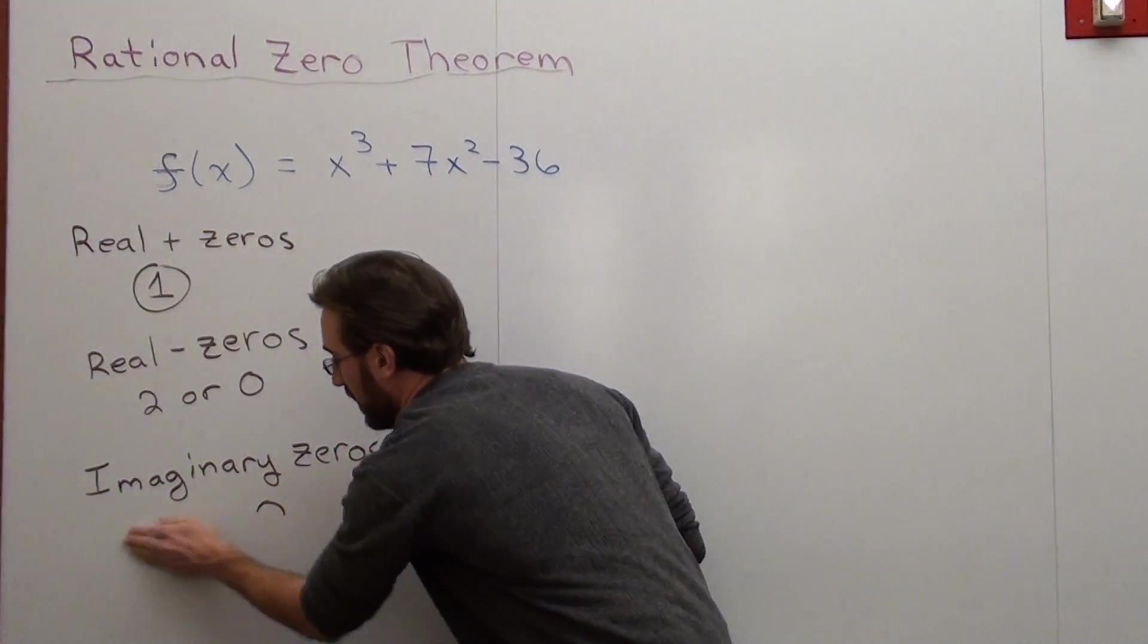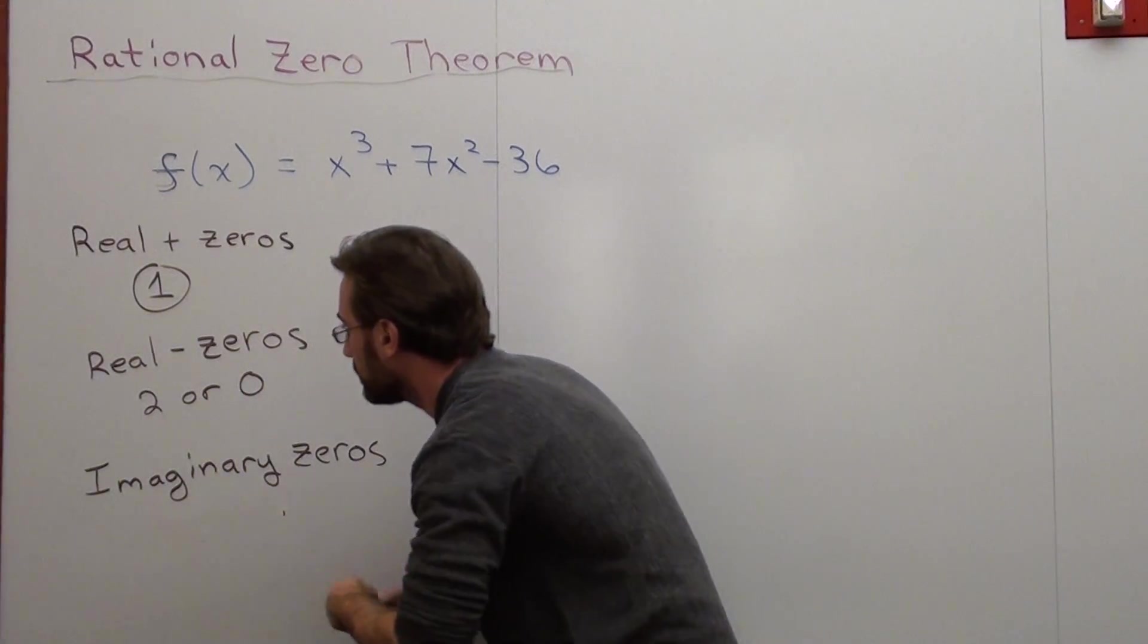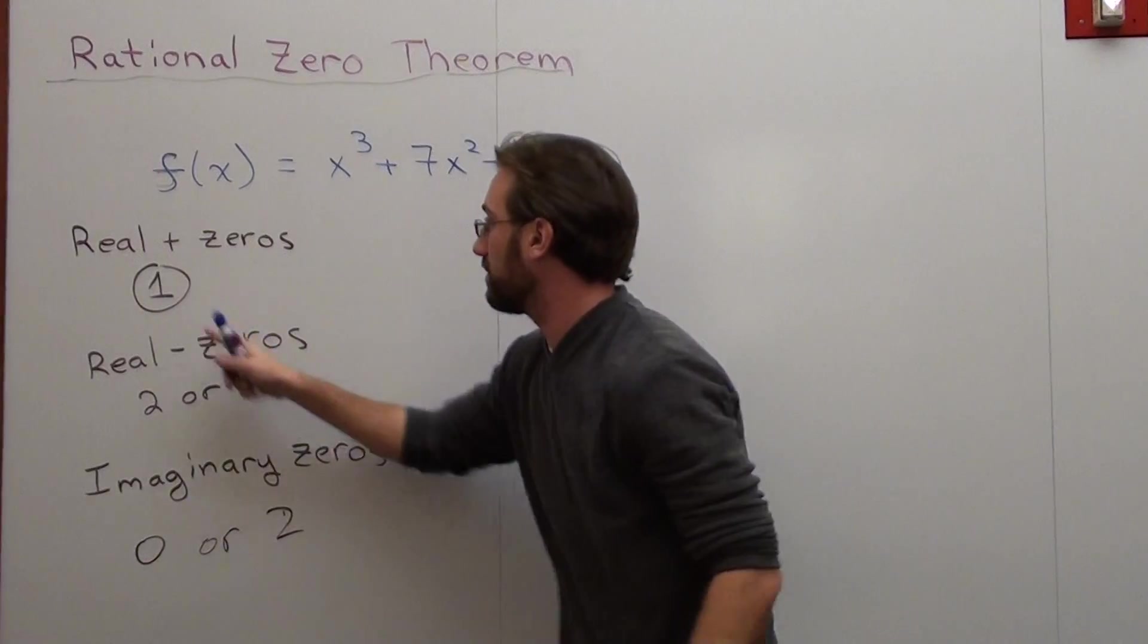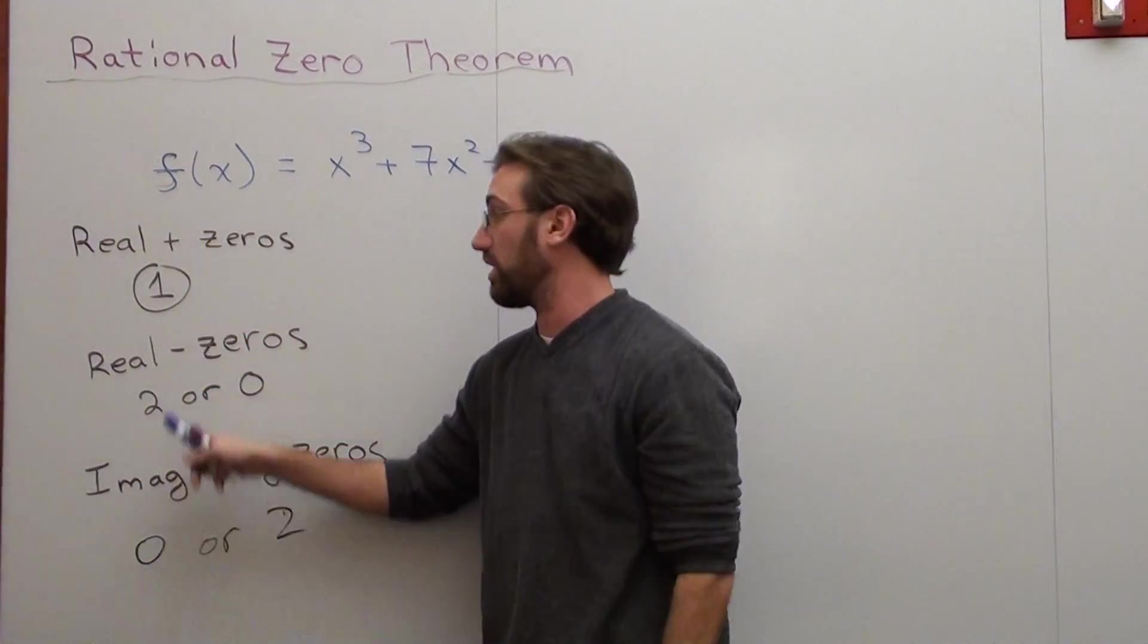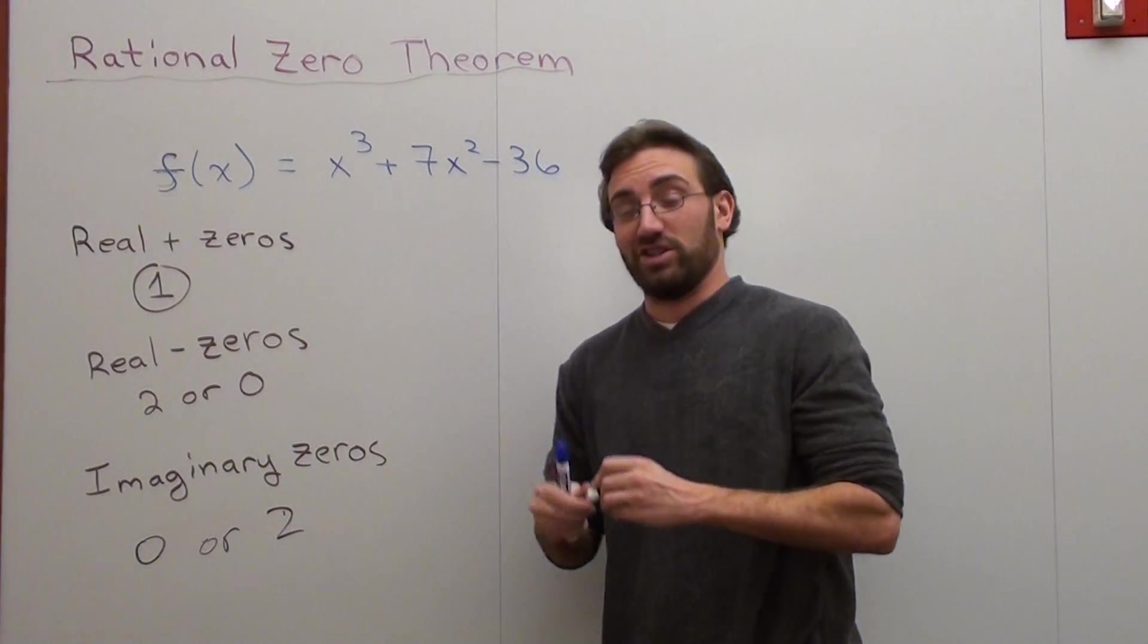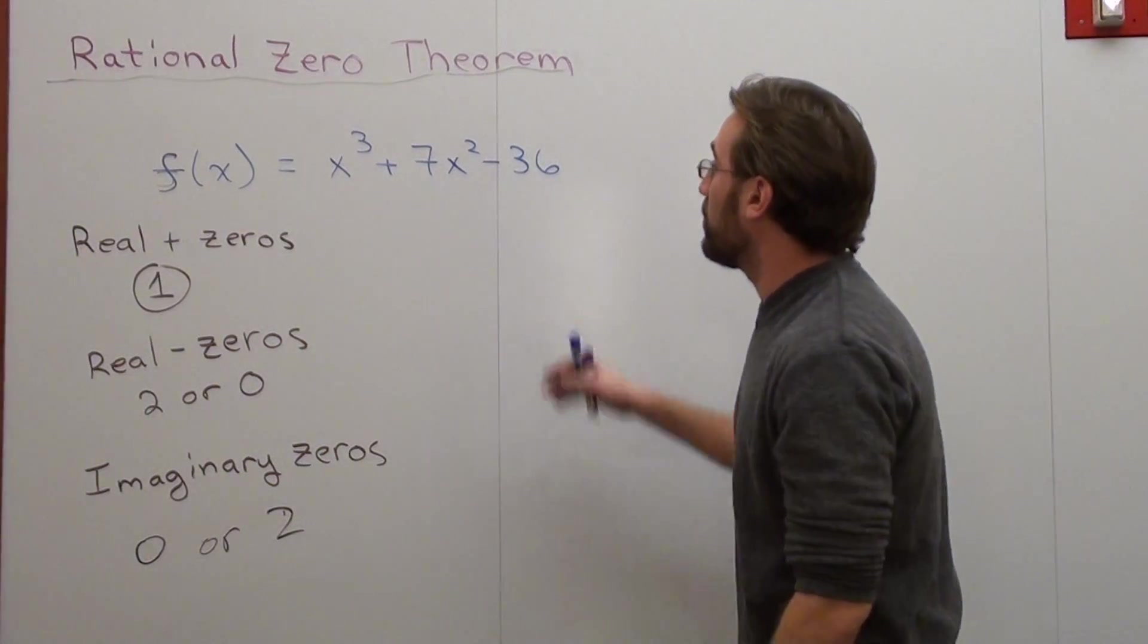Actually, I should probably write that as zero or two, because if it's one, two, then it's zero imaginary, and if it's one, zero, then it's two there. Anyways, that was a mistake I should have probably caught, but I didn't. So, moving on.